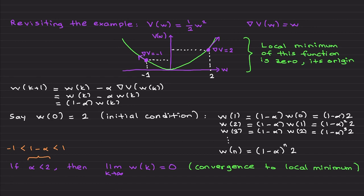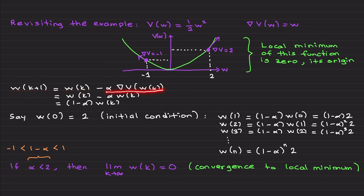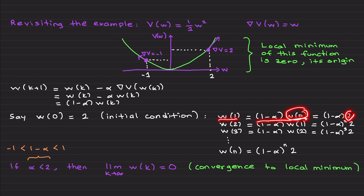Let's revisit a simple example. We want to find the local minimum — in this case it's also the global minimum — of the function one-half w squared. Recall its gradient is w. So the update equation is: w(k+1) = w(k) minus alpha times w(k), which simplifies to w(k+1) = (1 - alpha) times w(k). Without loss of generality, let's start at w₀ = 2 as our initial condition. In the first step, w₁ = (1 - alpha) times 2.